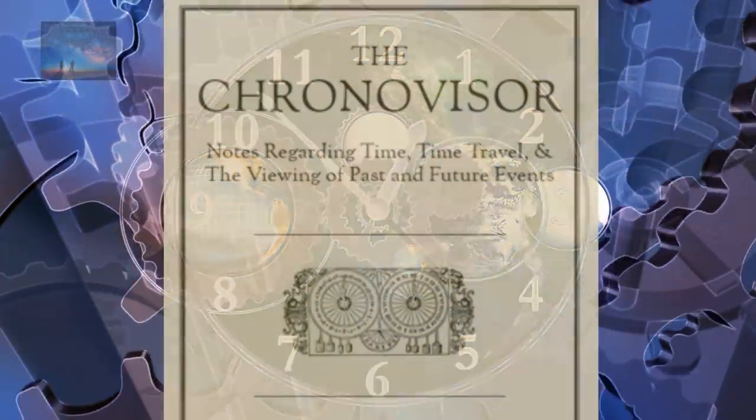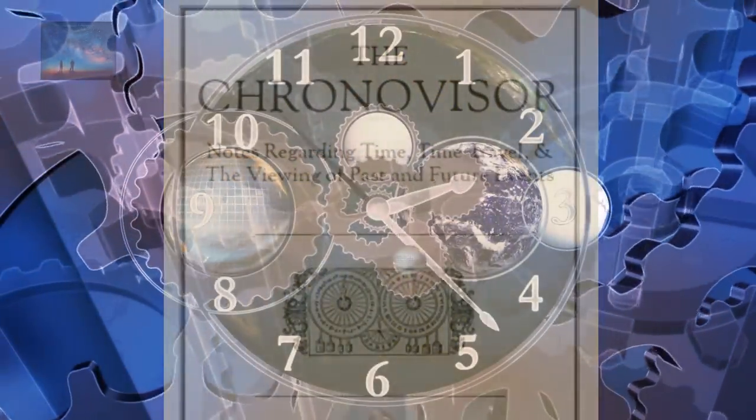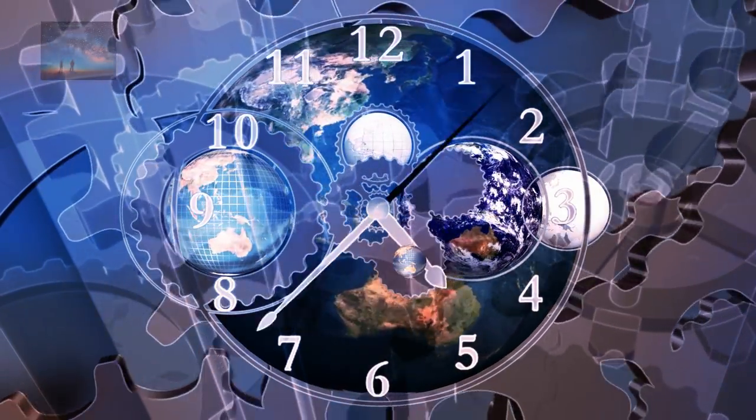One hushed up time travel device you might not have ever heard of is the Chronovisor. The Chronovisor is the name given to a machine that was said to be capable of viewing past and future events.